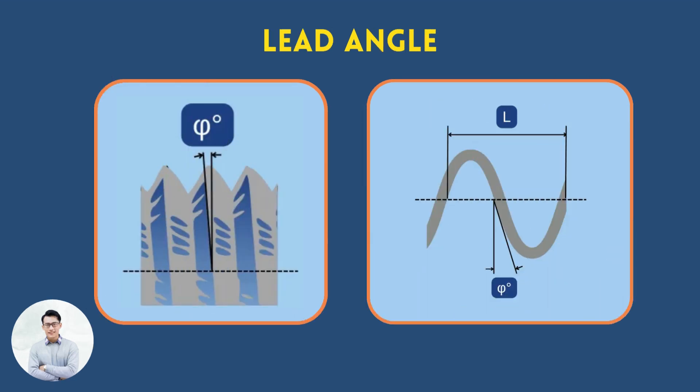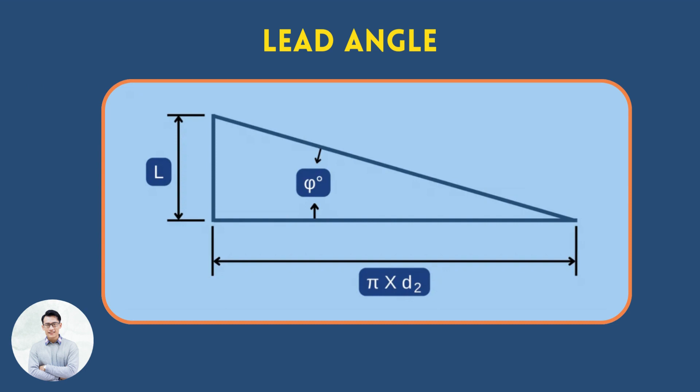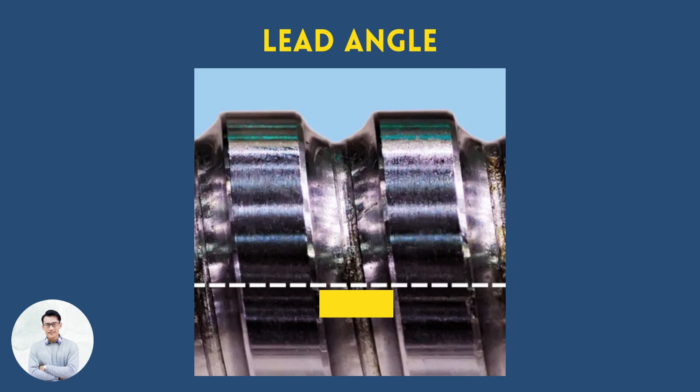The lead angle is the angle between the helix and a plane perpendicular to the screw's axis. Simply put, it is the proportion between the screw's lead and its diameter. When machining a thread, the best practice is to tilt the cutting edge by the lead angle size. It ensures symmetrical relief on both sides of the cut.